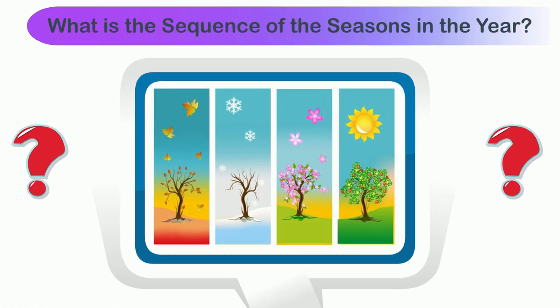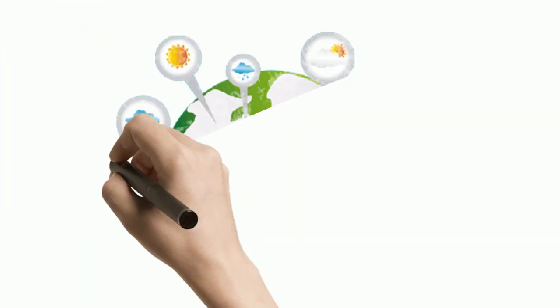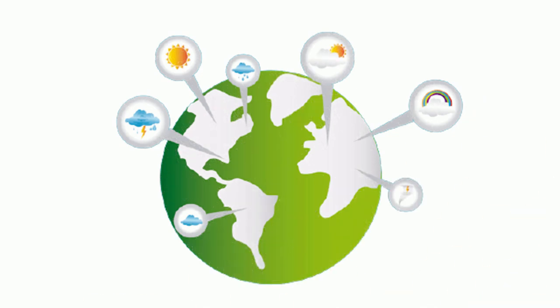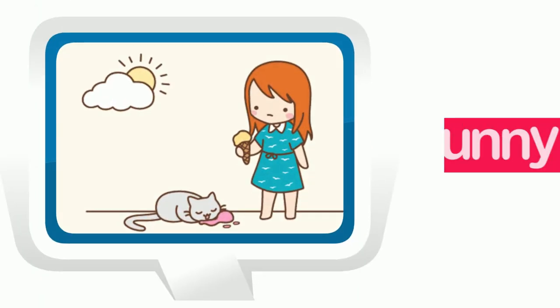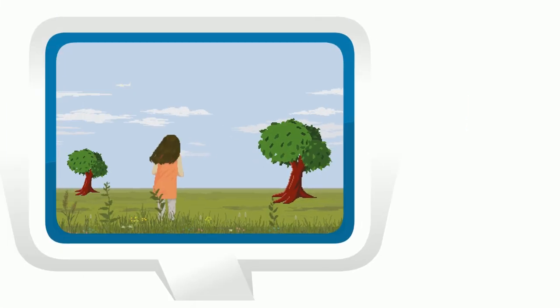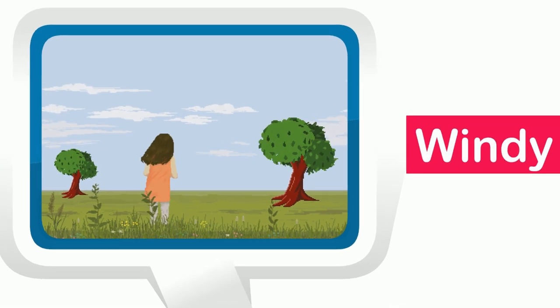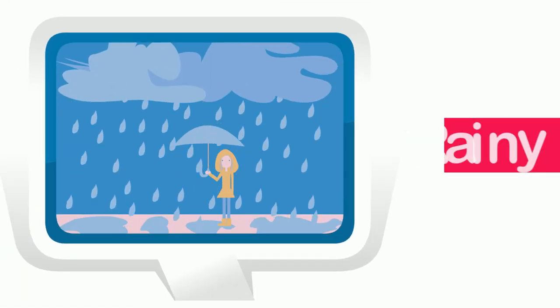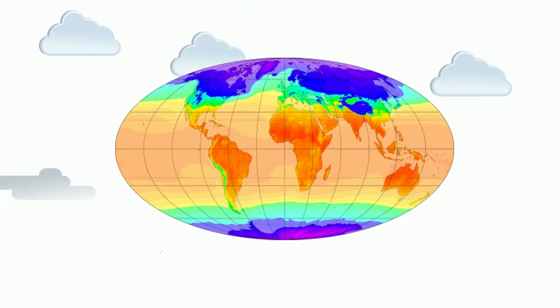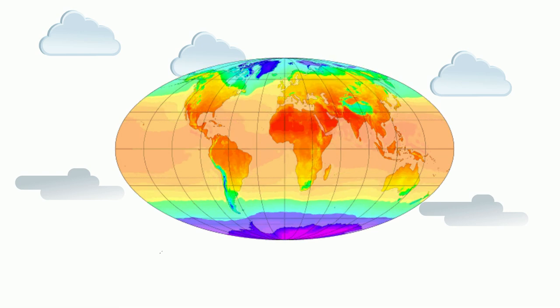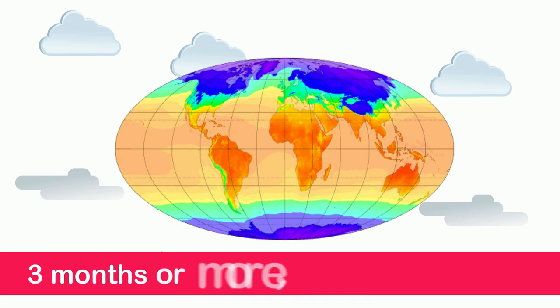Previously we learned about the weather, which is a condition of atmosphere around us that can be sunny, cloudy, windy, or rainy. When a weather stays the same for a long period of time, for instance about three months or more, it is called a season.